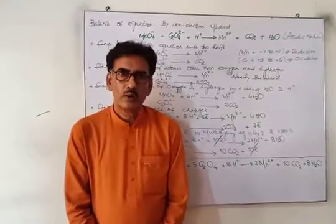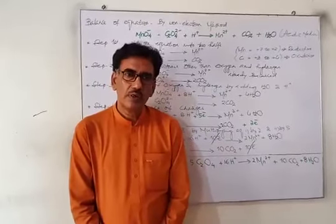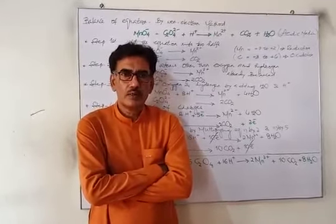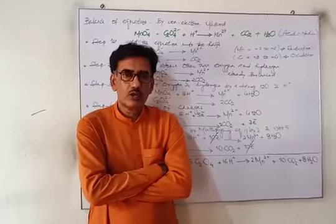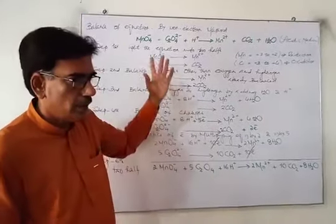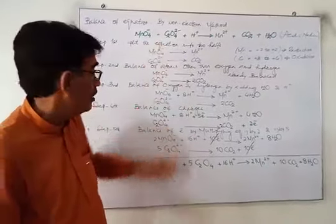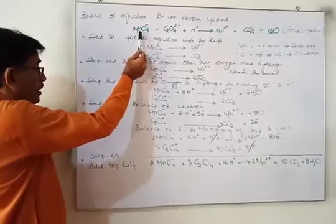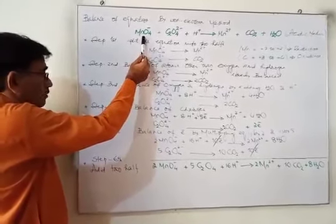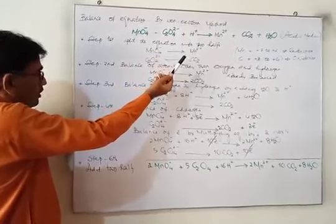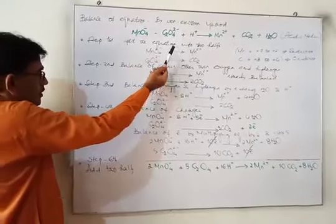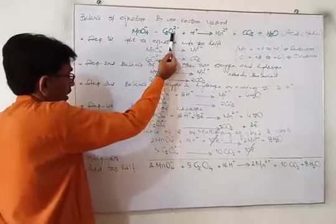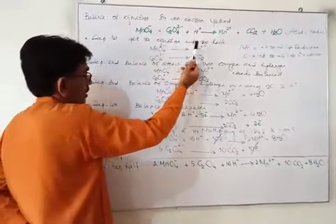In this balancing, we have a type of reaction called redox reaction. In this redox reaction, we have the example of permanganate ion taken from potassium permanganate and the oxalate ion taken from oxalic acid.